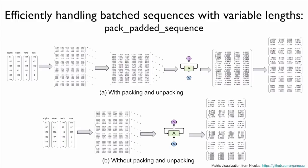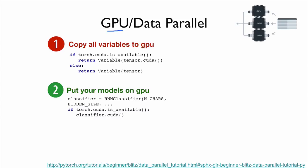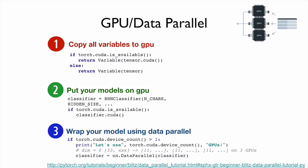Another way to make operations more efficient is using GPUs. In PyTorch, using GPUs is extremely simple — just two steps. First, copy all variables to GPU using tensor.cuda() and create a variable from it. Second, put your model on the GPU by calling model.cuda(), so each model can read data directly from GPU. Then you can use the classifier as normal.